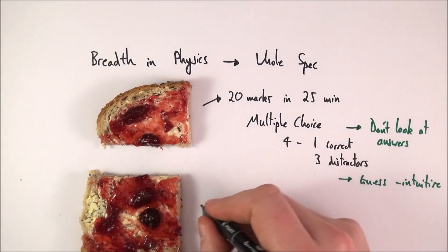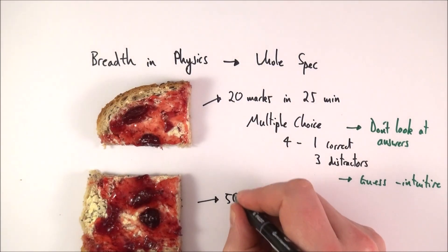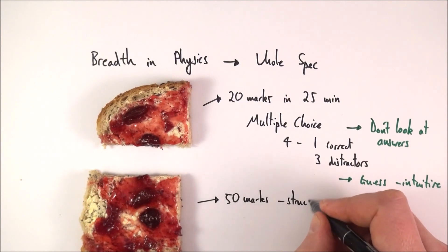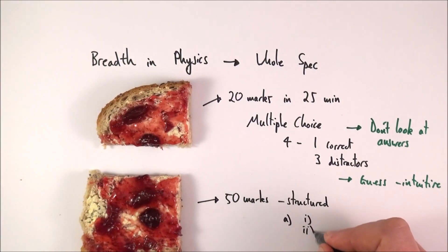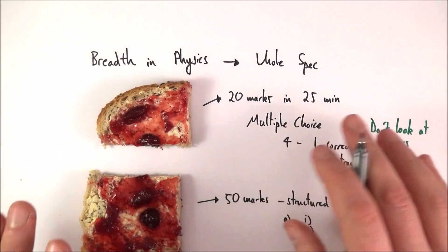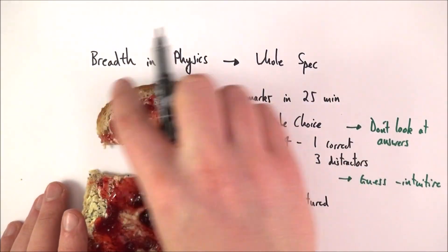So what about the other 50 marks? Well basically these 50 marks are on questions which are structured, and that means it might have part A, part i, part ii, and so on. And again this is going to be lots of fairly short questions about the whole specification, and that's why it's called breadth in physics.